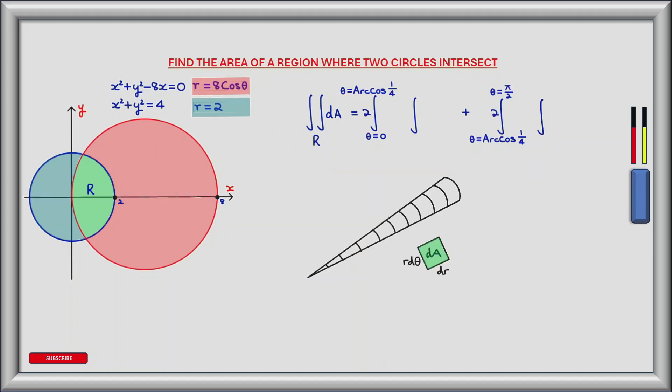Now let's look in more detail at summing infinitesimally small sectors of area in the r direction, which will represent the inner integrals. This diagram represents a sector of the region R. The angle the sector makes is infinitesimally small, denoted by d theta. Within the sector we have infinitesimally small pieces of area dA, where the height is dr and the width is r d theta. So dA equals r dr d theta. To find the total area of the sector we integrate in the r direction.